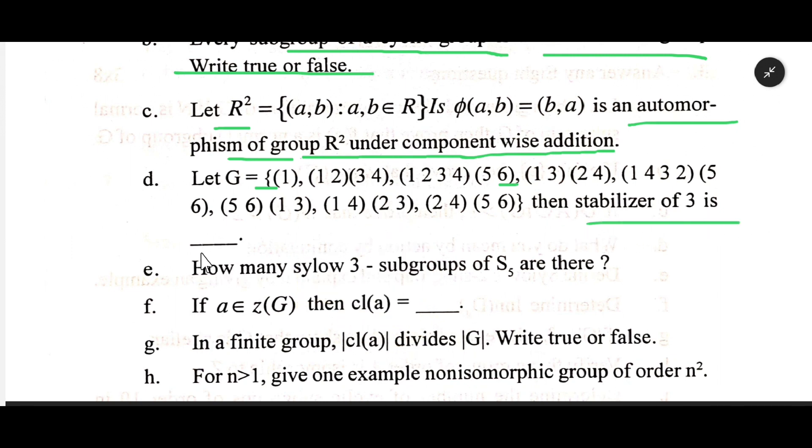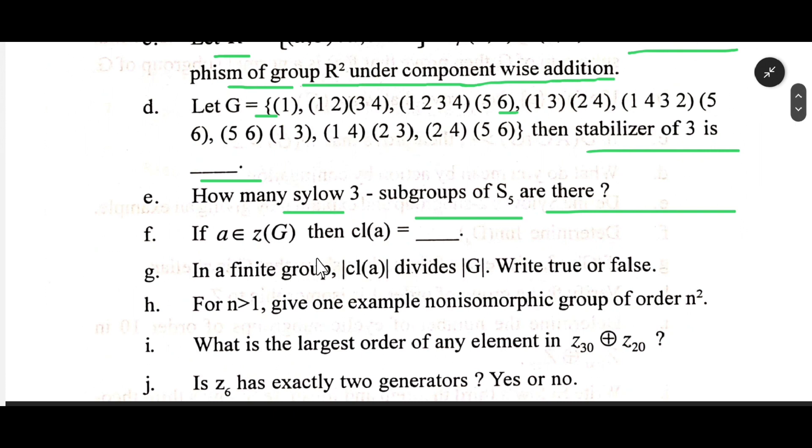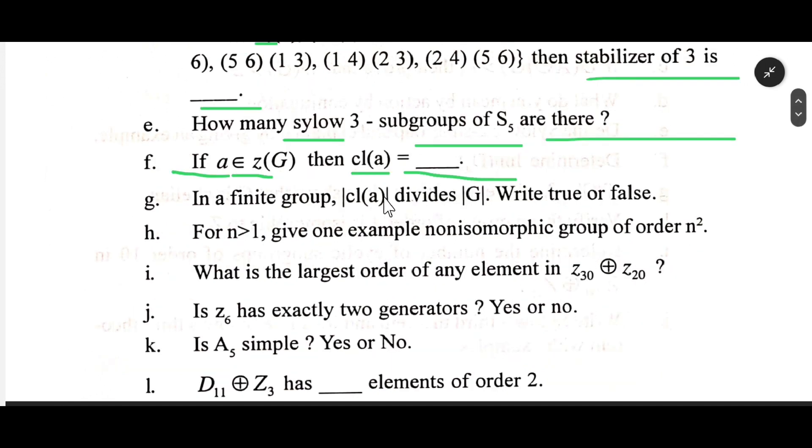How many Sylow 3-subgroups of S₅ are there? If a ∈ Z(G) then cl(a) = ___. In a finite group |cl(a)| divides |G|. Write true or false.